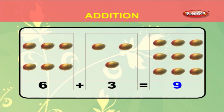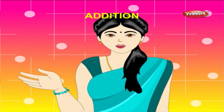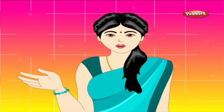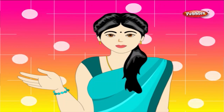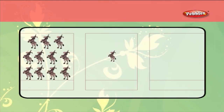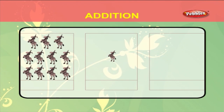Adding 1-digit numbers with 2-digit numbers. There are 1, 2, 3, 4, 5, 6, 7, 8, 9, 10, 11 donkeys in the first box and 1 donkey in the second box.